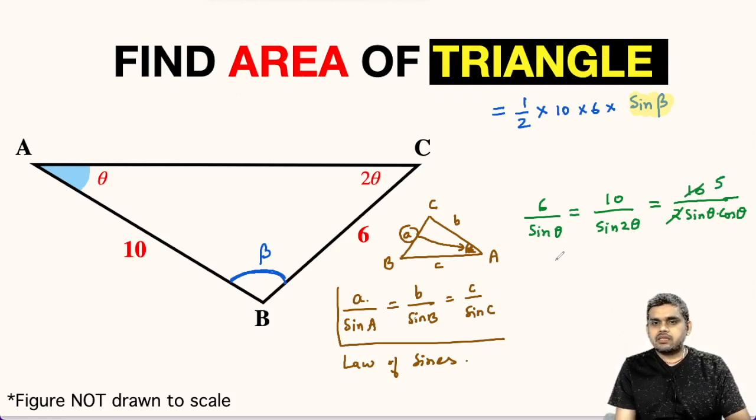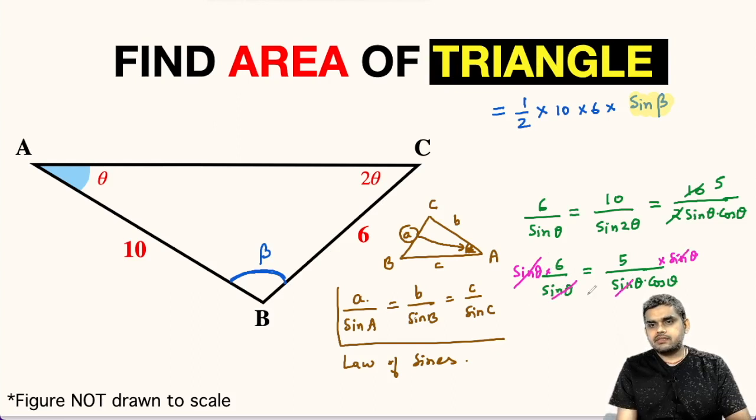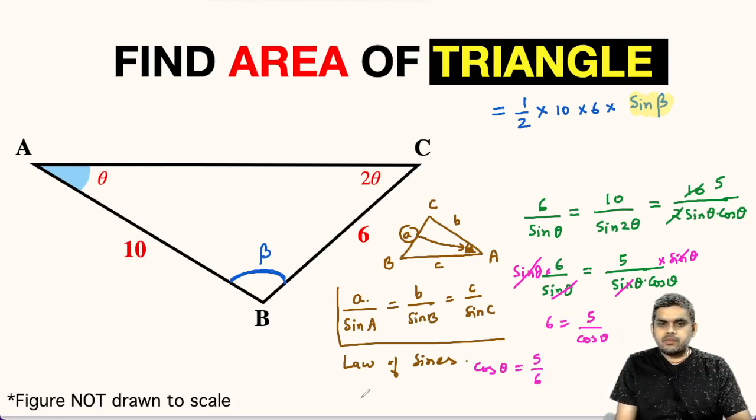We can cancel, so this will be 5. So here we will get 6 upon sine theta equals 5 upon cos theta. Now let us multiply both sides by sine theta. This will cancel, so we will be left with 6 equals 5 upon cos theta, or we can write cos theta equals 5 upon 6.